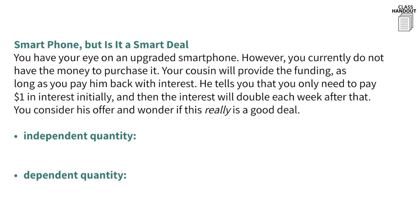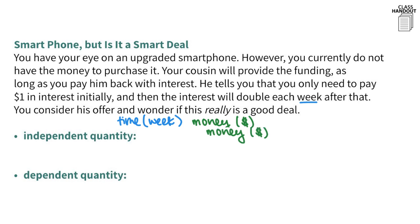You have your eye on an upgraded smartphone but don't have the money, so your cousin offers to fund it with interest — starting at $1 and doubling each week. The two quantities are time, measured in weeks, and money, measured in dollars. With most problems involving time, time will generally be the independent quantity, and that rule follows here. The amount of money you owe will depend on the time, so money is the dependent quantity and time is the independent quantity.